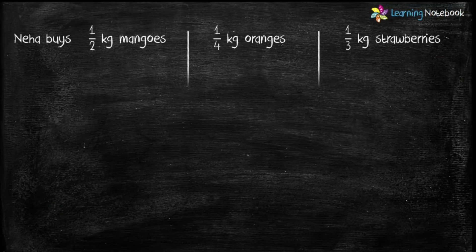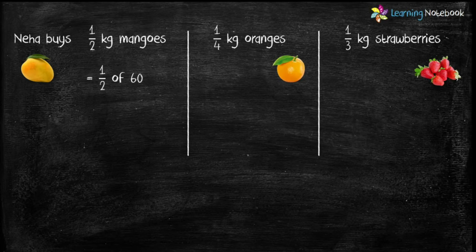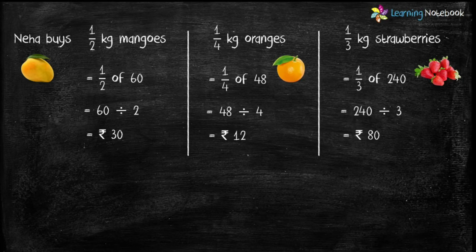Now let's find the amount paid by Neha. Neha buys half kg mangoes, one-fourth kg oranges and one-third kg strawberries. Cost of one kg mangoes is Rs 60. Therefore, cost of half kg mangoes is 1 by 2 of 60. Divide 60 by 2 and cost comes out to be Rs 30. Cost of 1 kg oranges is Rs 48. Therefore, cost of one-fourth kg oranges is 1 by 4 of 48. Divide 48 by 4, which is equal to Rs 12. Calculate the cost of one-third kg strawberries, which is 1 by 3 of 240. Divide 240 by 3, which is equal to Rs 80.